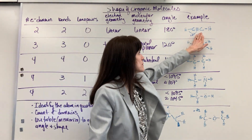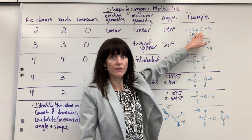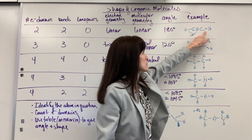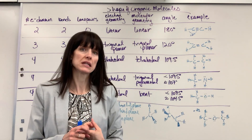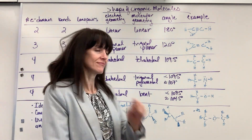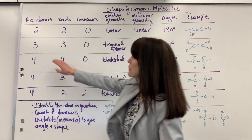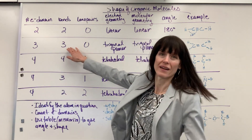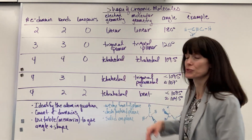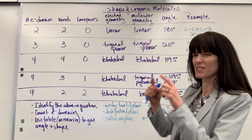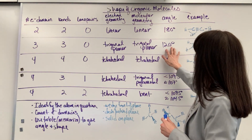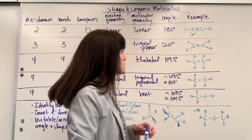Notice it would be the same for this carbon — it also has two electron domains, so its angle will be 180 degrees and its shape will be linear. Now, with three electron domains, let's say they're all bonded, zero lone pairs — that's called trigonal planar, because it looks like a triangle and it's all in one plane. The angle on that is 120 degrees.